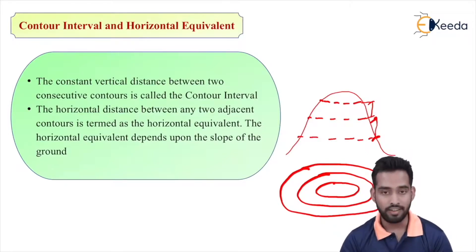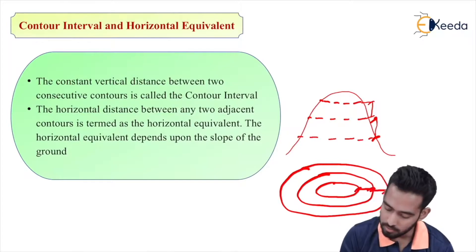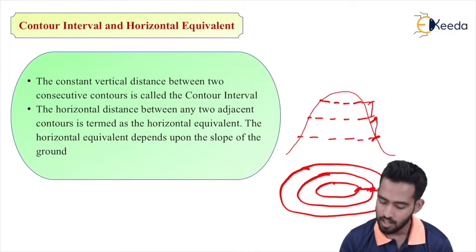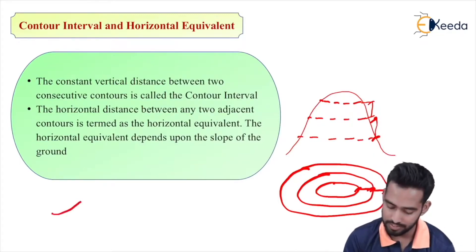After this, next is horizontal equivalent, and it is nothing but the horizontal distance between two successive contours. The horizontal distance depends upon the slope of ground, so it can be the same between two contours or it may differ depending upon the slope of your ground.